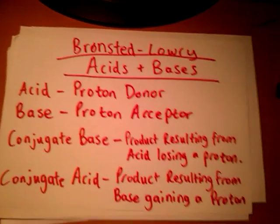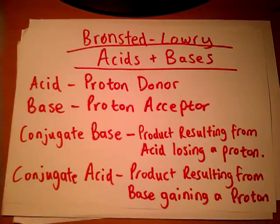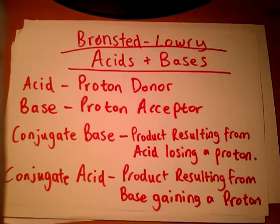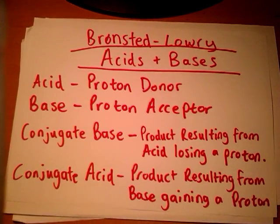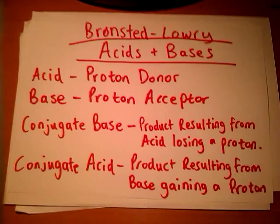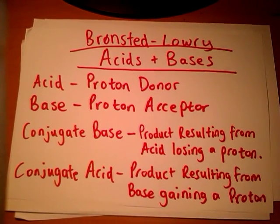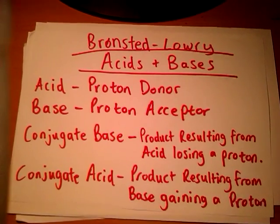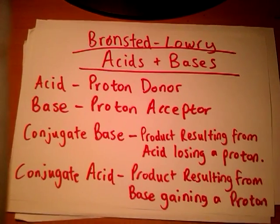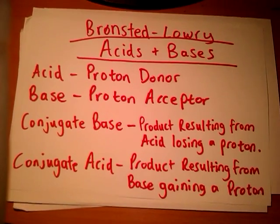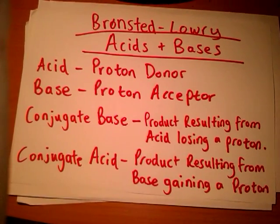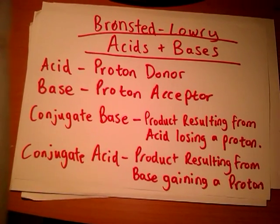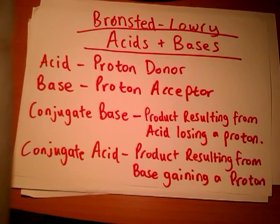From the definition of Bronsted-Lowry acids and bases, an acid is a proton donor — it's donating protons or hydrogen ions. The base, however, is a proton acceptor — it's the one which is accepting protons or hydrogen ions. The conjugate base is the product resulting from the acid losing a proton, and the conjugate acid is the product resulting from the base gaining a proton.